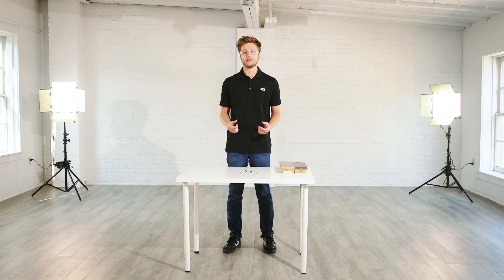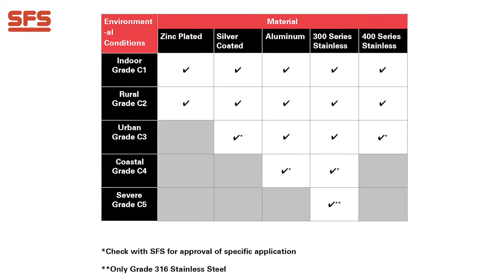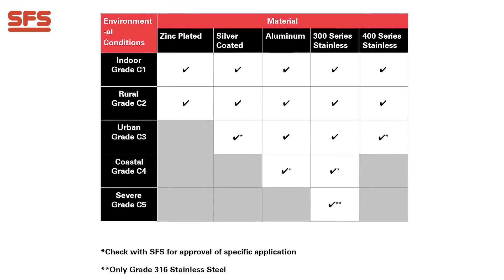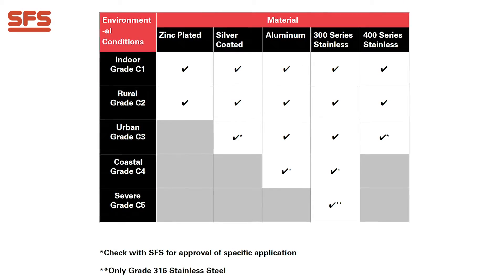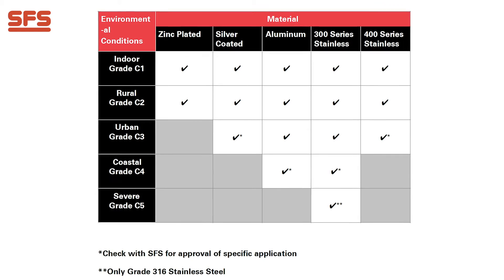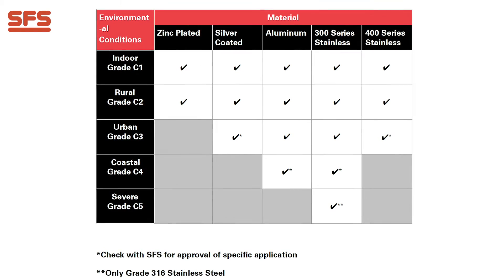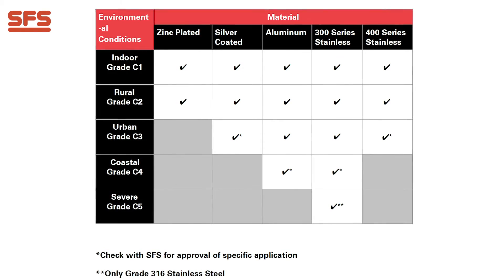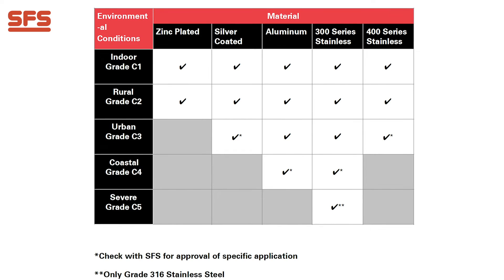In addition, the environmental conditions at your job site must be considered. For instance, if you're near a coastline, there's a higher risk of corrosive damage. You can use the chart on screen to determine the specific conditions at your job site and which fasteners will be appropriate.